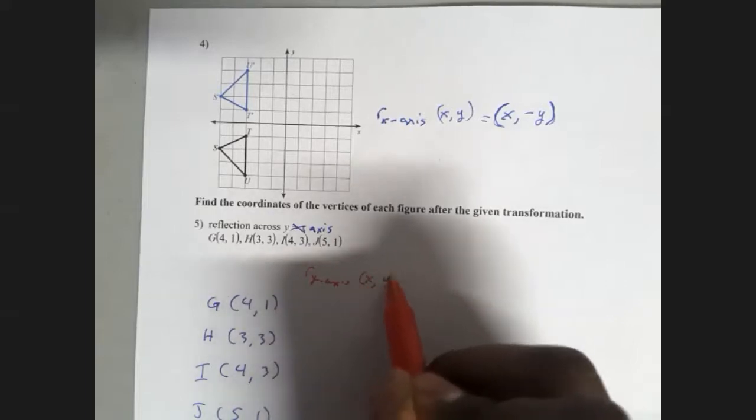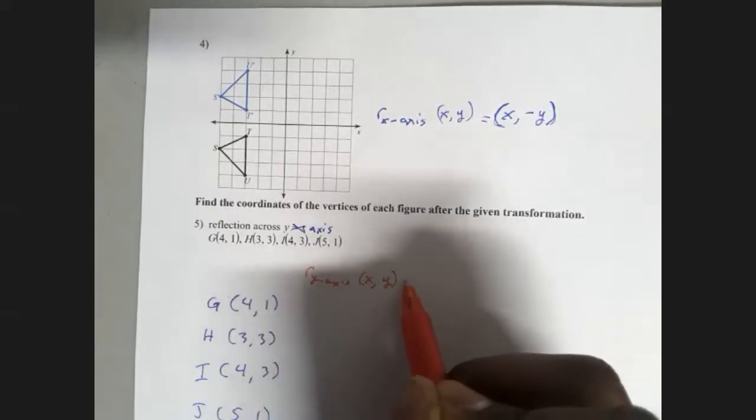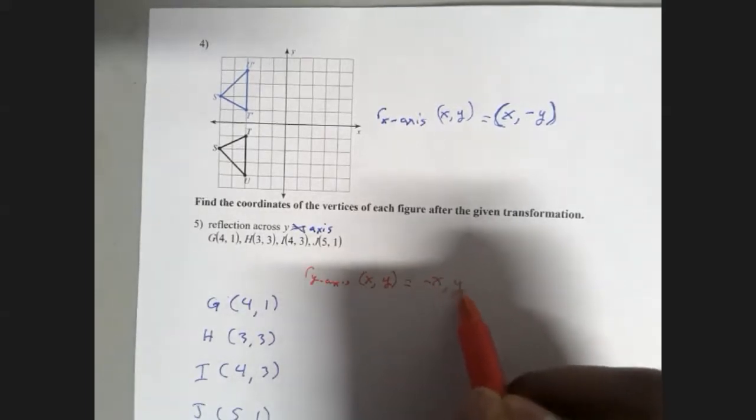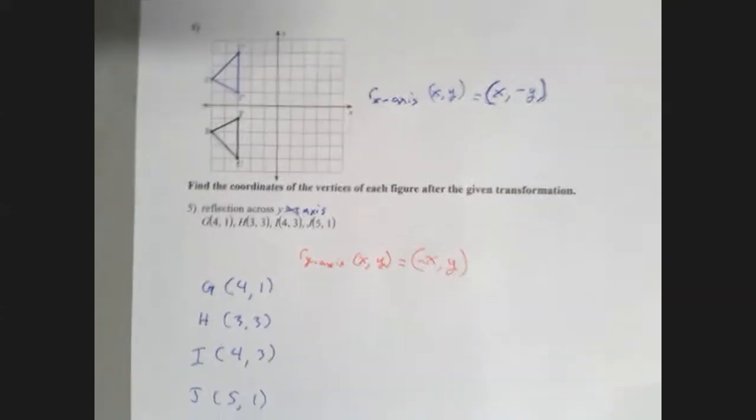(x, y), the points that you have, will now become (-x, y) when we reflect across the y-axis. Okay.